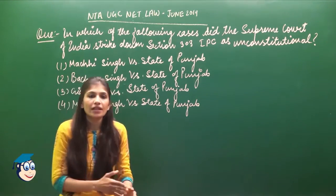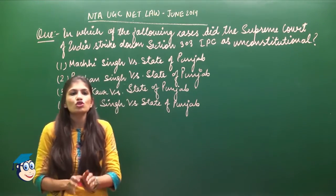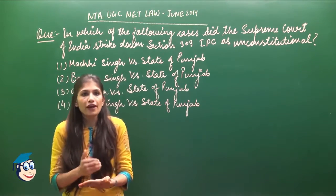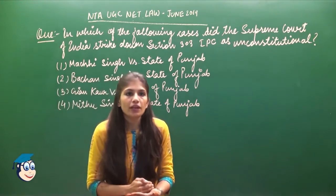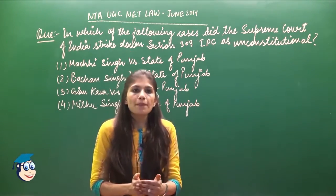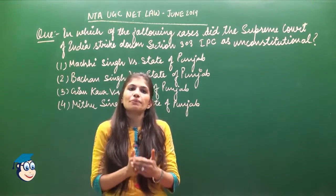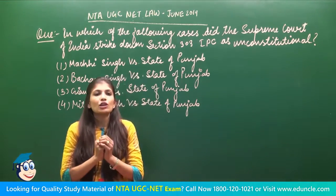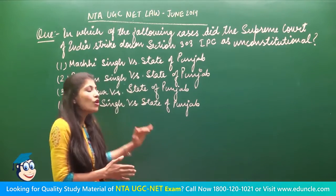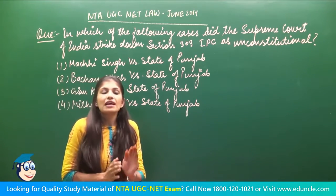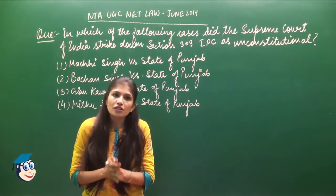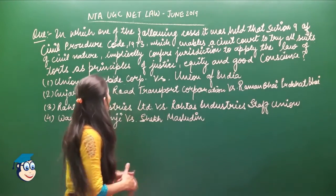Furthermore, Section 303 eliminates the court's discretion under Sections 235(2) and 354(3) to award appropriate punishment. The Supreme Court declared Section 303 IPC unconstitutional under Article 21, for both reasons: it is irrational and it removes the court's discretion — as established in Mithu Singh versus State of Punjab.